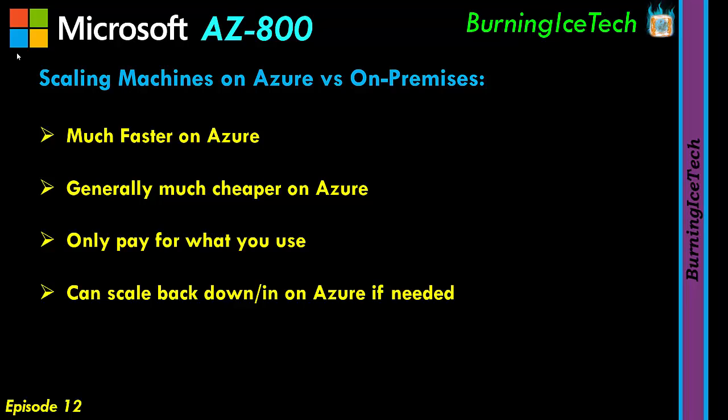Why would you want to scale back down or back in? It goes back to only paying for what you use. If you originally had two virtual machines, scaled out to three, but traffic and demand go back down to where you only need two, you can scale back in and only pay for two instead of three — saving a tremendous amount of money. On-premises, if you had three servers you'd be stuck with all three running day and night, with electricity and maintenance costs going through the roof.